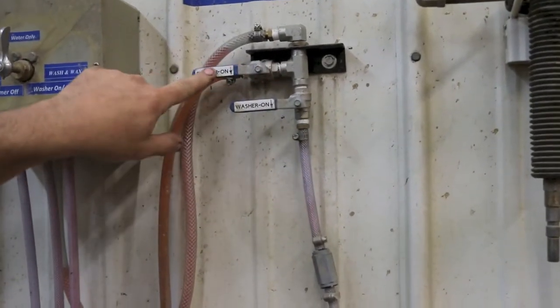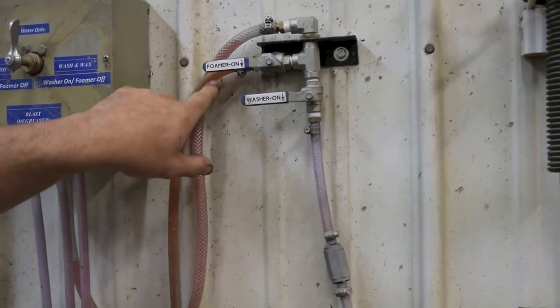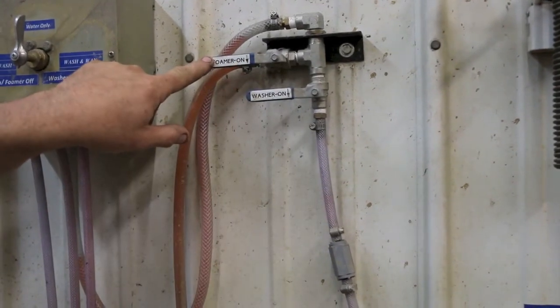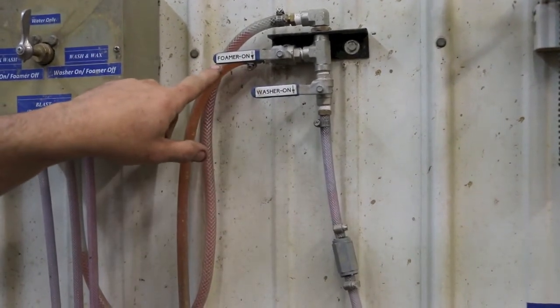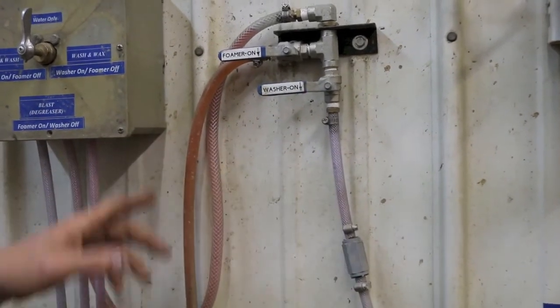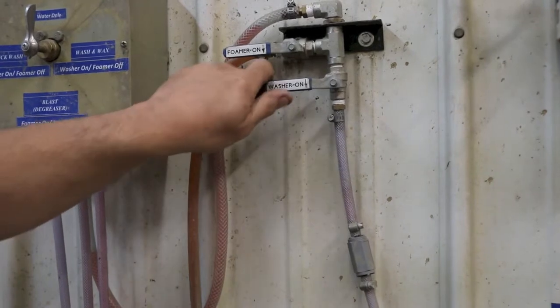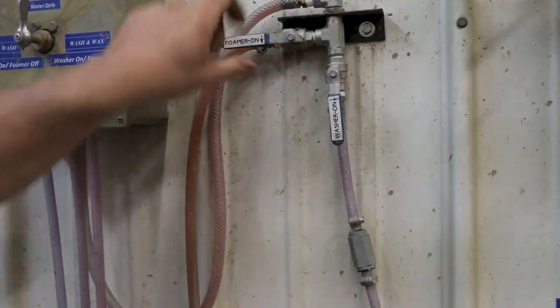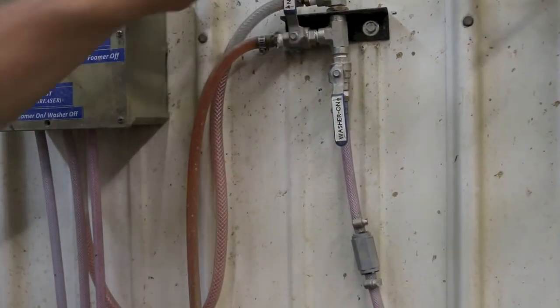So whenever the valve is in line with the hose, that means the ball valve is on. So in this case, the foamer is on and the pressure washer is off. If you were going to run the soap to the pressure washer, you could turn that on there and then turn the foamer off.